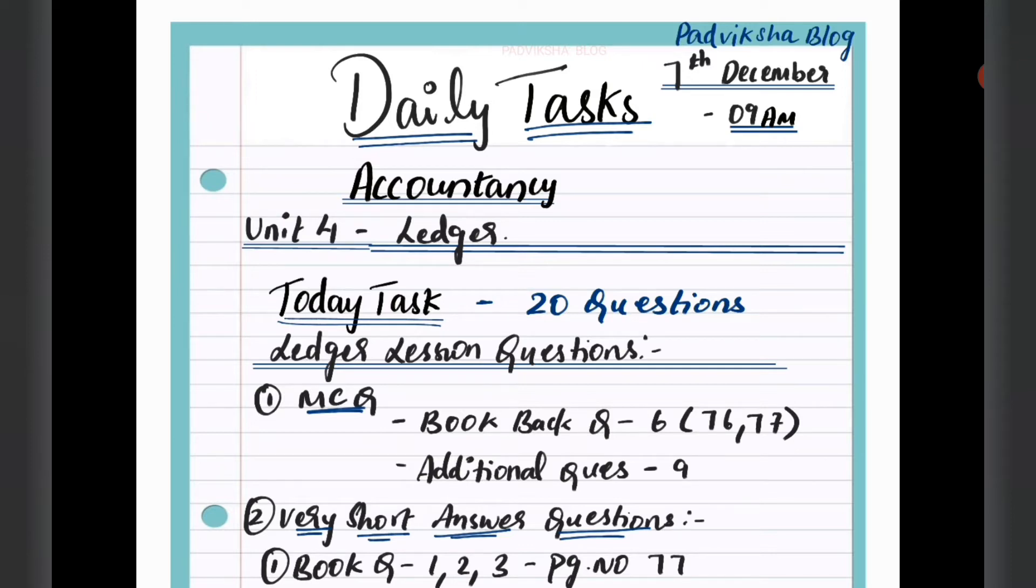So we are going to do unit 4. Unit 3 is already tested - units 1, 2, 3 are finished. And yes, 75 journal entries questions.